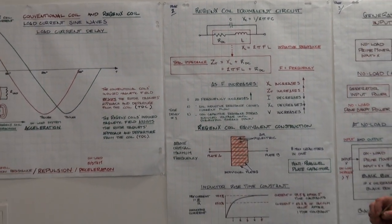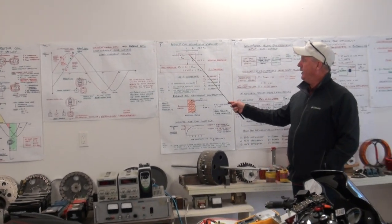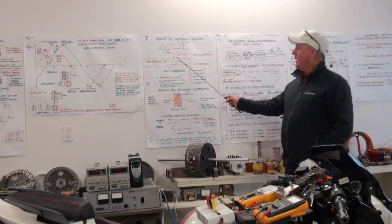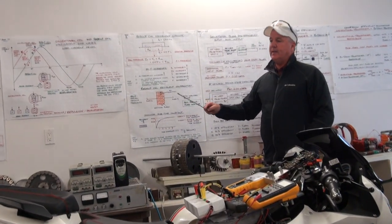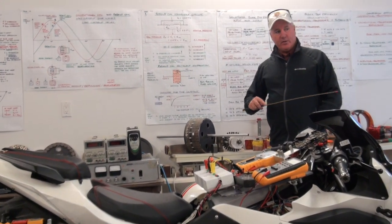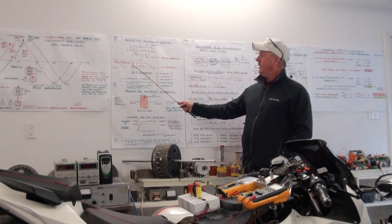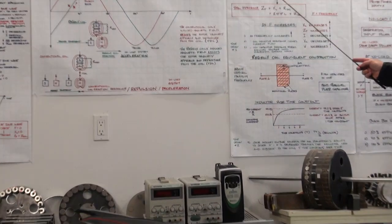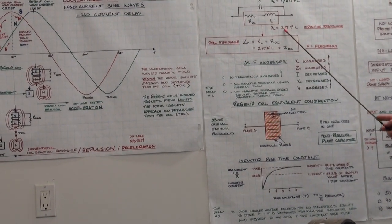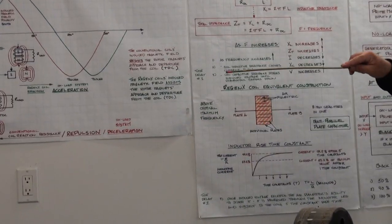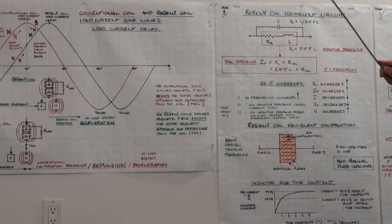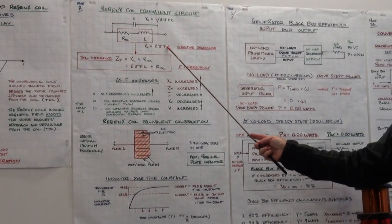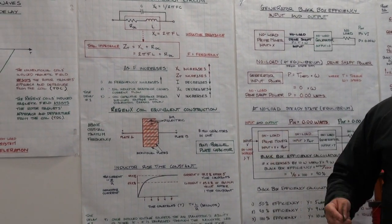In a normal generator coil, the capacitance is negligible. The total impedance — that's the AC resistance to current flow — ZT is the inductive reactance plus the DC resistance. The inductive reactance of the coil is 2πFL. So what you saw when we were operating at a higher and lower frequency, the only parameter we were changing was the frequency of operation, thus changing the inductive reactance of the coil.